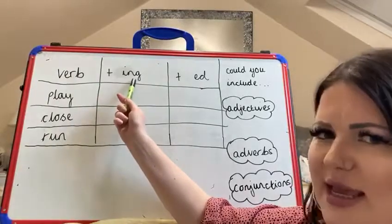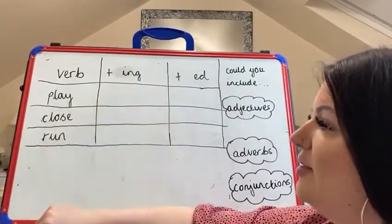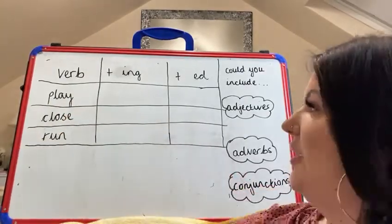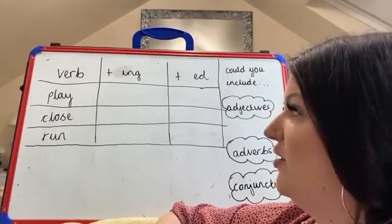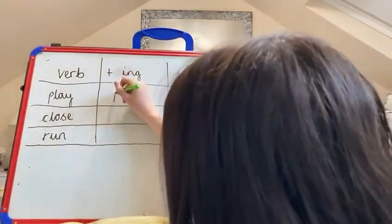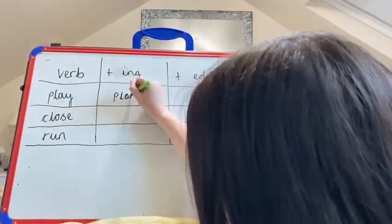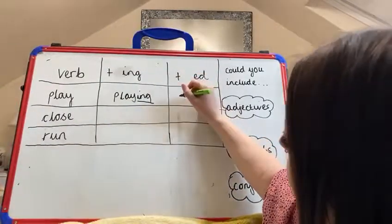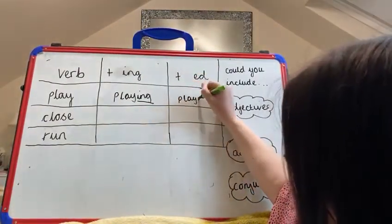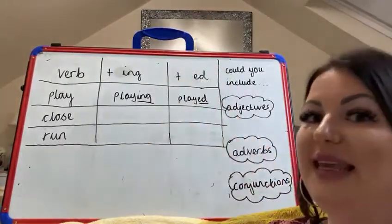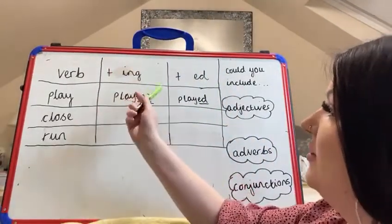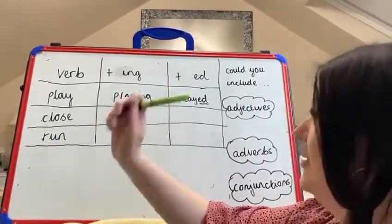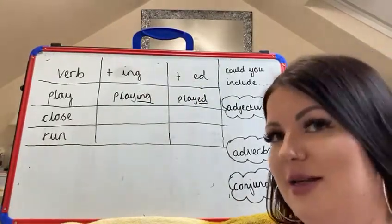I've got '-ing' and I've got '-ed.' I picked these three verbs for a reason — see if you can figure out why. So 'play' is a verb. I like to play. I am playing with my friends. I played with my friends. This makes me think about the tense of the word. If I am playing, I'm doing it right now — present tense. If I played, I've already done it — it's happened in the past tense.